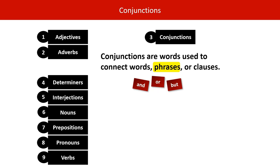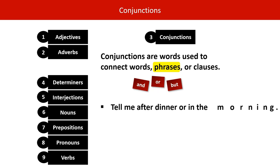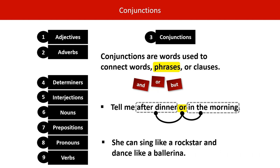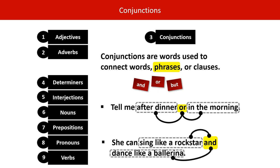Let's now see how conjunctions can join phrases. 'Tell me after dinner or in the morning.' Our conjunction is 'or' and it connects the phrase 'after dinner' and the phrase 'in the morning.' 'She can sing like a rock star and dance like a ballerina.' And is our conjunction joining those two phrases.